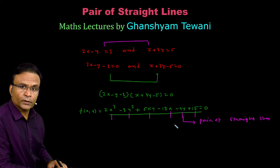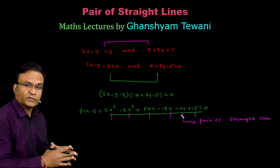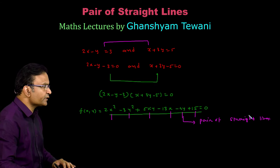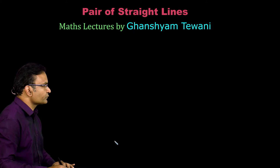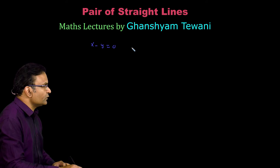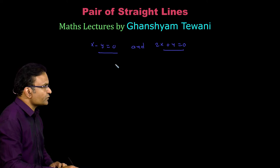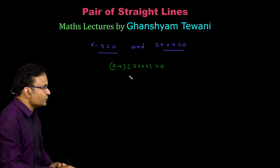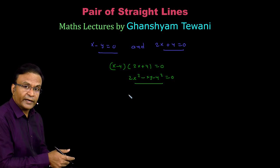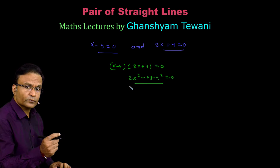But it is not necessary that you always get all these terms in the equation of a pair of straight lines. For that, consider two straight lines through the origin: x minus y is equal to 0 and 2x plus y is equal to 0. These are two straight lines passing through the origin. Multiplying, we get (x minus y)(2x plus y) is equal to 0, which expands to 2x square minus xy minus y square is equal to 0. In this equation we do not have an x term, y term, or constant term — all terms are second degree terms. In fact, this equation is a homogeneous equation.